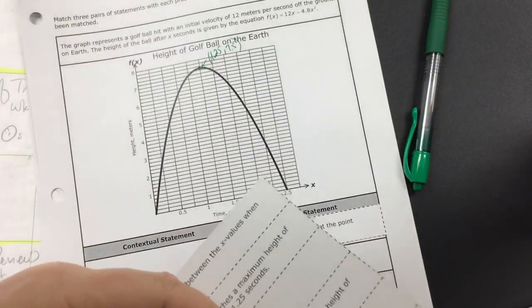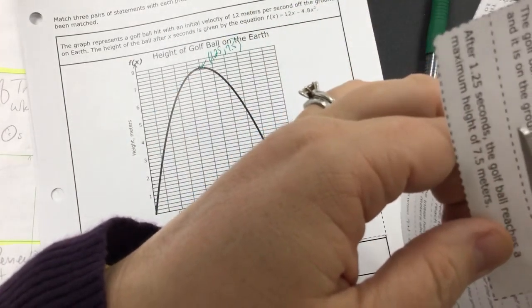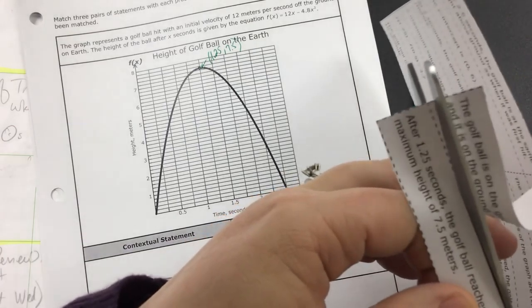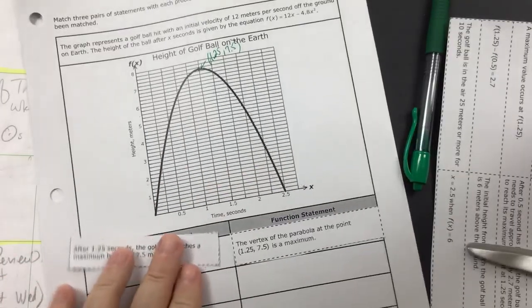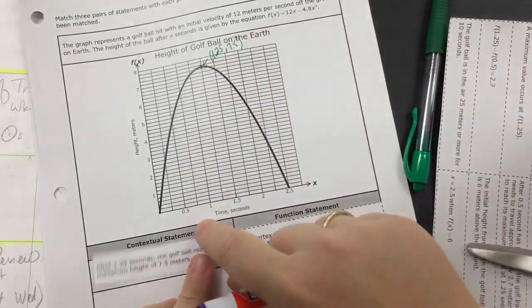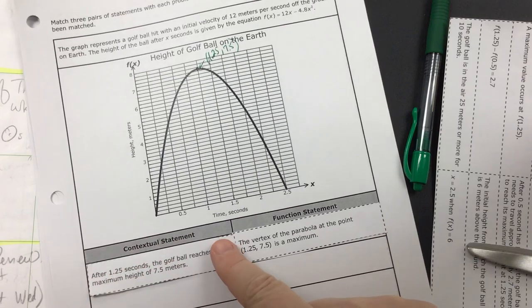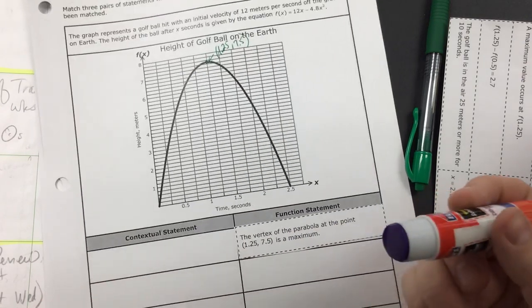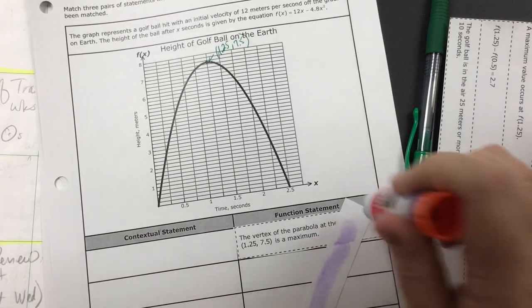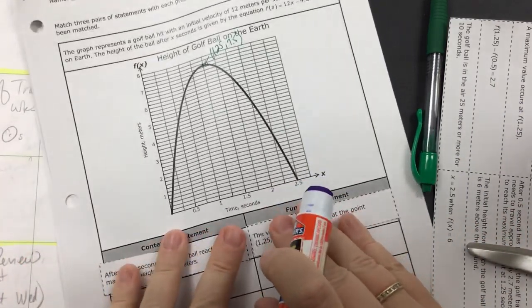The golf ball reaches a maximum height of 7.5 meters. So this card here is actually the contextual statement that goes with the function statement. Because we said our function was 1.25 comma seven and a half. Well, what that means is this is the maximum height here. So again, after 1.25 seconds, the golf ball reaches a maximum height of seven and a half meters. So again, you're going to use glue or tape, whichever you prefer, and attach that there.